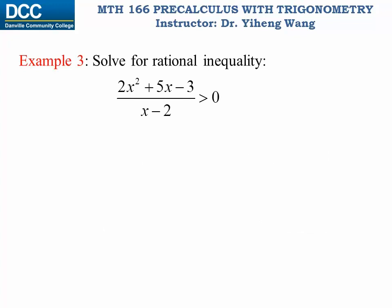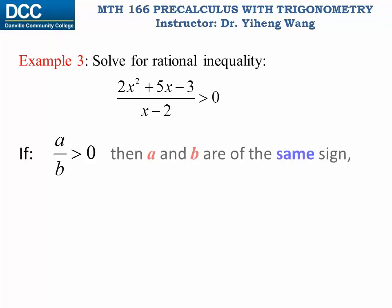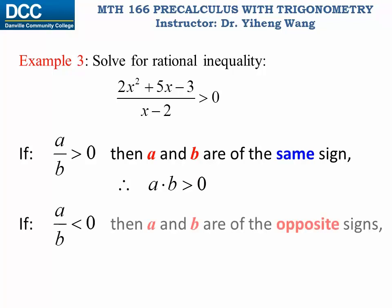To solve a rational inequality, recall an important property: if a divided by b is greater than zero, then a and b must be of the same sign — both positive or both negative — so their product is also greater than zero. If a divided by b is less than zero, then a and b are of opposite signs, so their product is also less than zero.